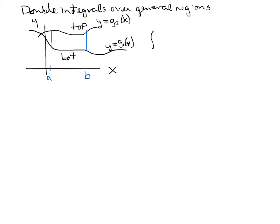We write it as the integral from a to b, and then the integral from g₁(x) to g₂(x), integrating some function f(x,y). Notice that because we're describing a top and bottom function, we're describing them along the y-axis — those functions are y equals functions of x, so dy goes with those. The dx describes the x-values a and b, which are along the x-axis, so that goes on the outside of the integral.